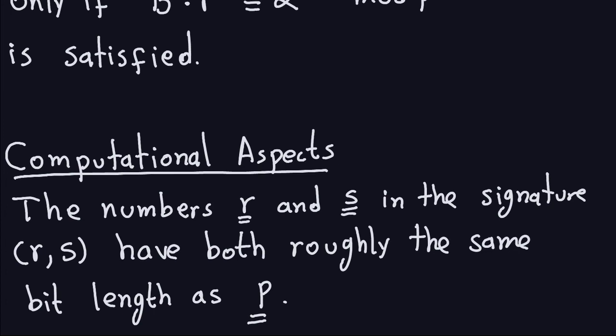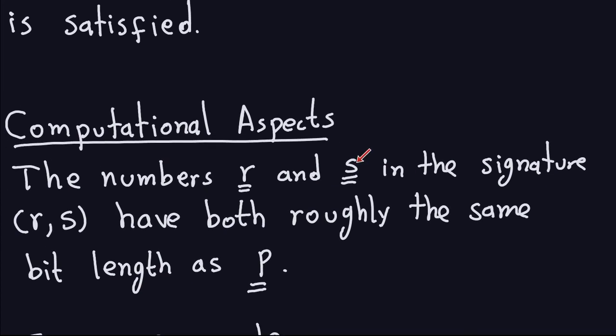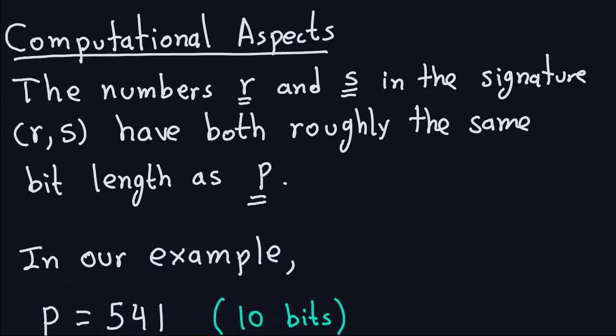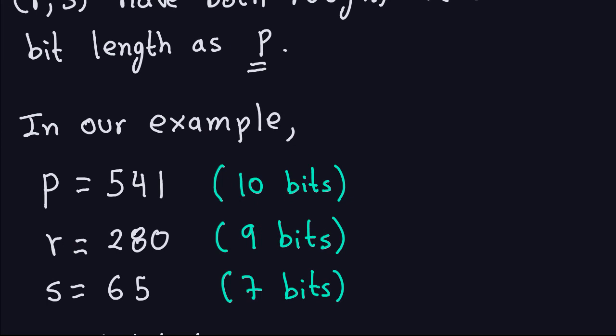Let's talk about a computational aspect of the signature. One of the things that might be worrisome is that the numbers R and S, which are part of the signature, they have roughly the same bit length of P. In our sample, P is 541, which is 10 bits. R and S, which are part of our signature, R is 280, which is 9 bits, and S is 65, which is 7 bits.